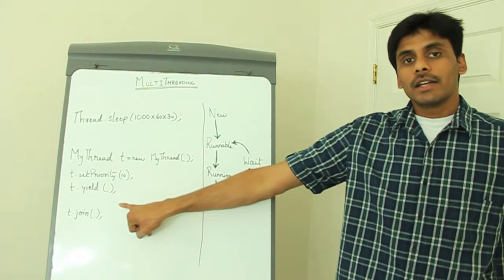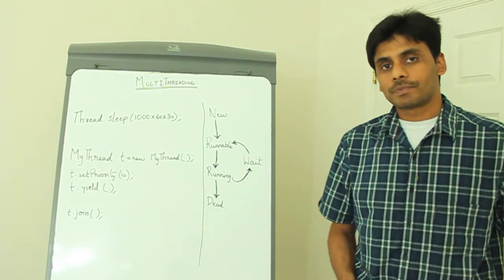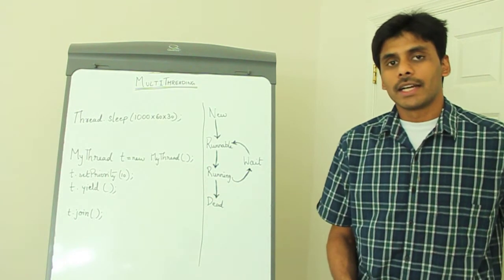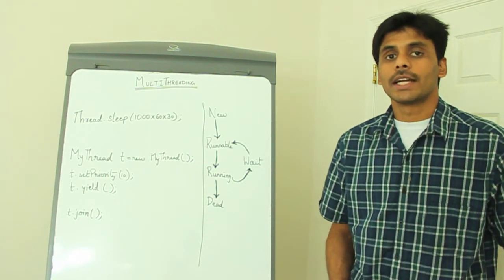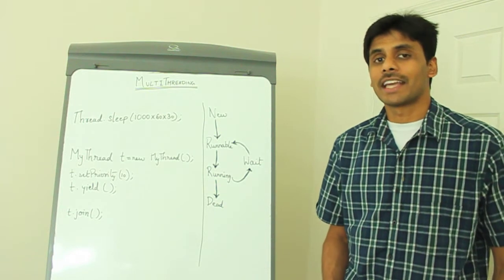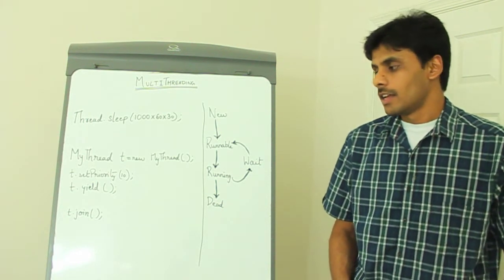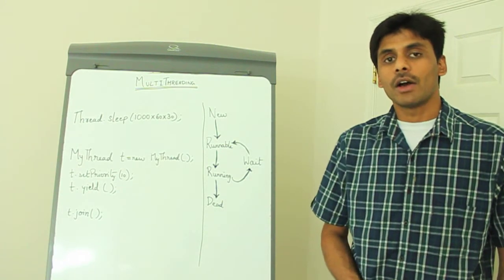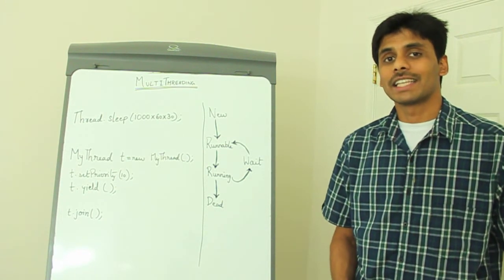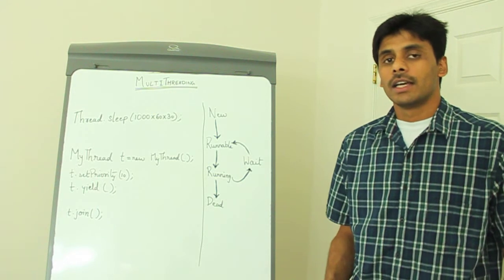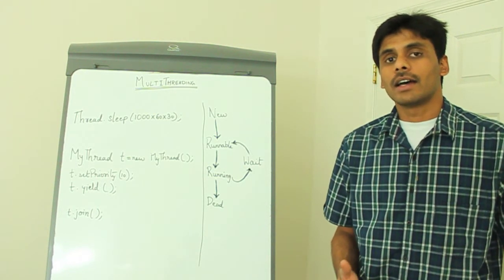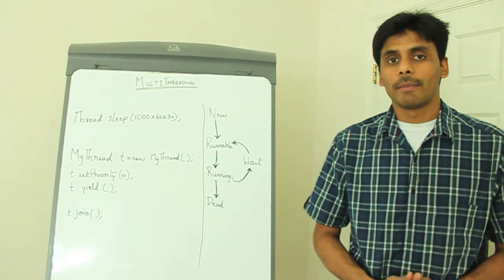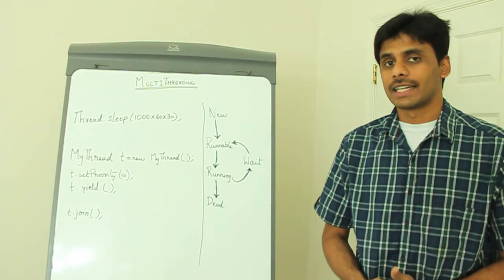The yield method when invoked on a thread moves the current thread to the runnable stage so that another thread with the same priority can run. The join method on the other hand, puts the current thread at the end of the thread on which the join is invoked, so that the thread can wait until the other thread finishes its job which is required by the previous thread.